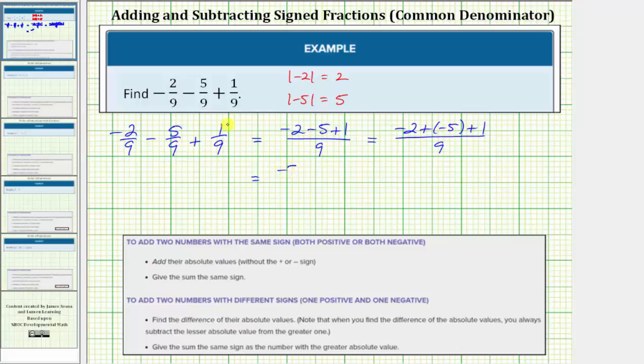So this simplifies to negative seven plus one over nine. And now we'll use the formal rules for adding negative seven and positive one.